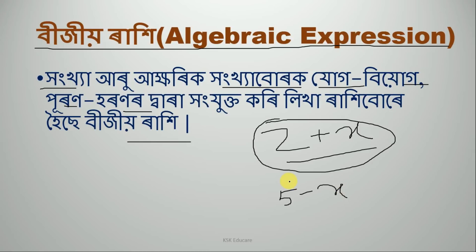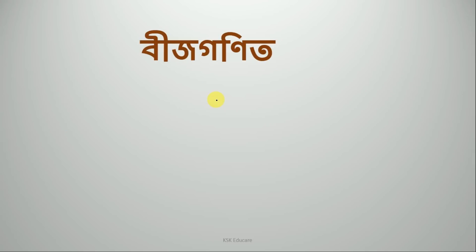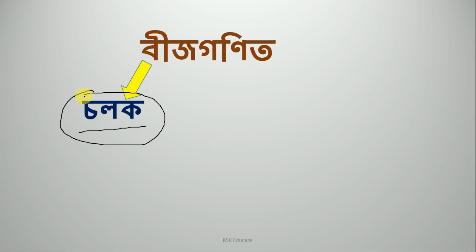5 minus x — eta algebraic expression hoi. We can also write x plus y — eta ki hoi? This is also a bijio rakhi (algebraic expression). Now, pratik vebar kori hao hai — each time we evaluate it, se amaar salok hai. The key thing about a variable like x is that eek x tur man — the value of x — we cannot fix it. It can take any value: zero, or minus 10, or any number.